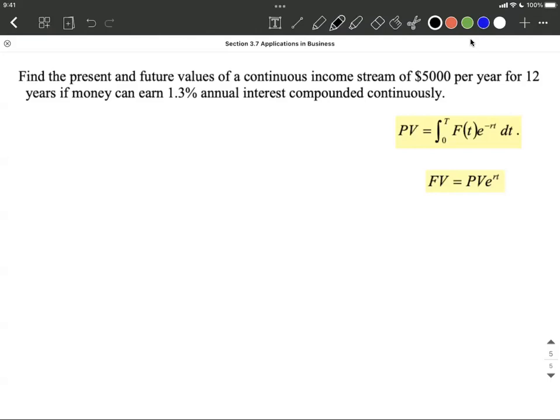So off to the side, I've gone ahead and included the present value and future value formulas. Now to get the future value, we need to find the present value first. So thinking about all the different information that was thrown in our direction. We're given a function, f of t was a constant $5,000 per year. So I'm going to fill that in for f of t. We were given a time frame, big T, of 12 years. And then we were given a rate, r, of 1.3% interest compounded continuously.